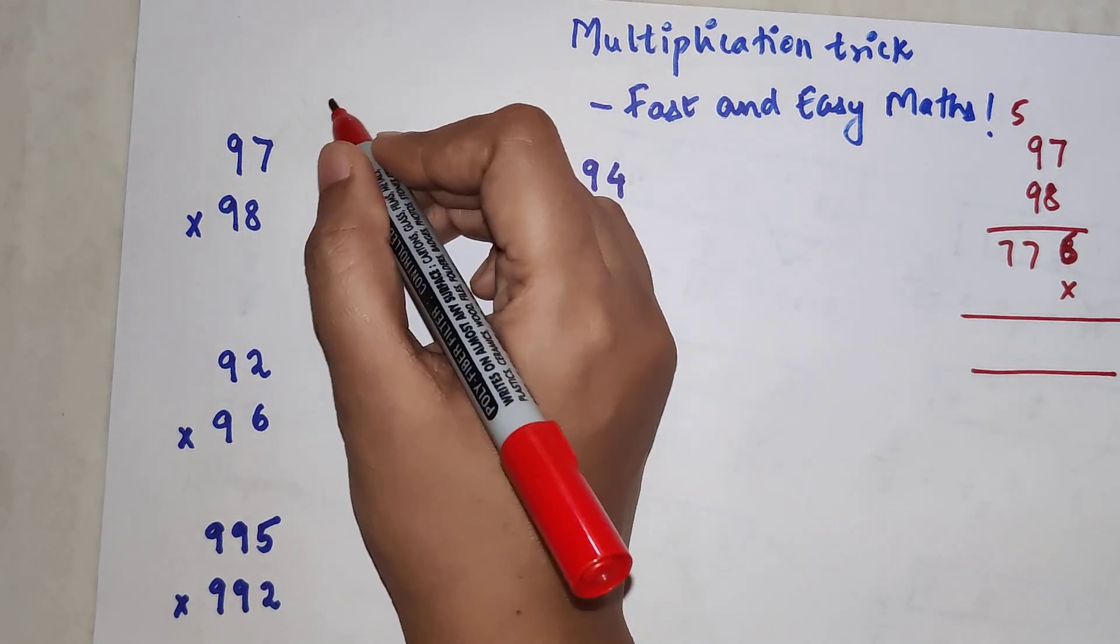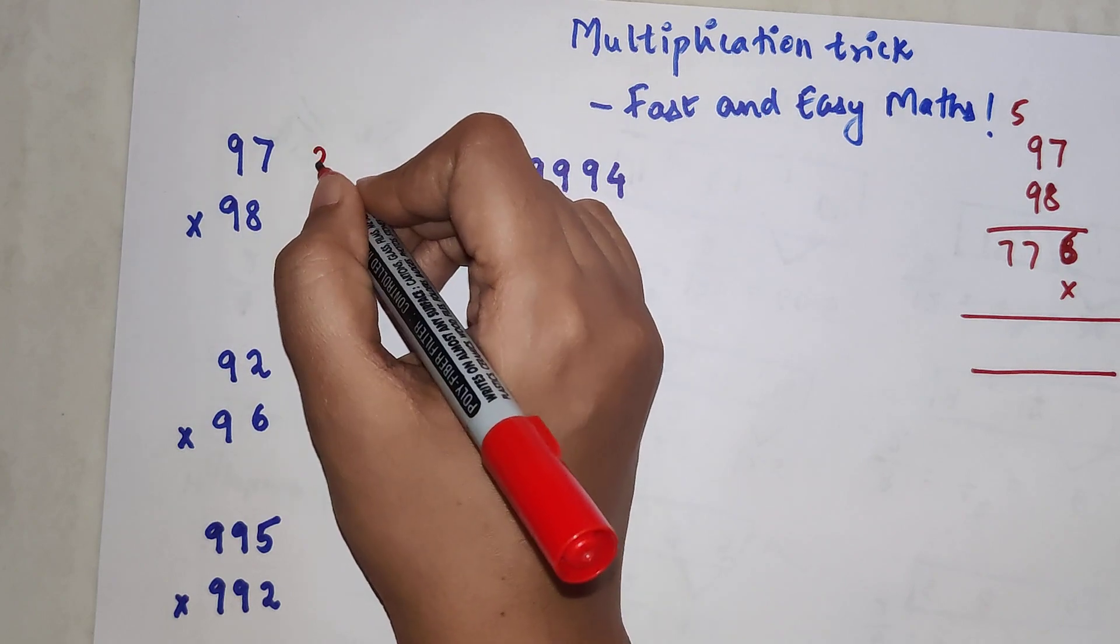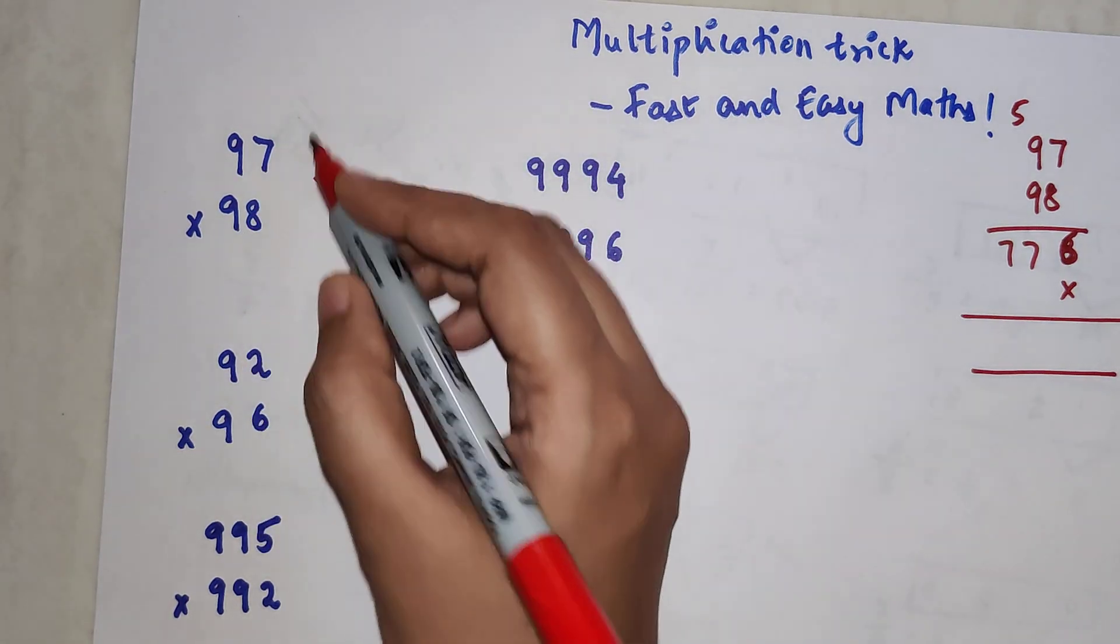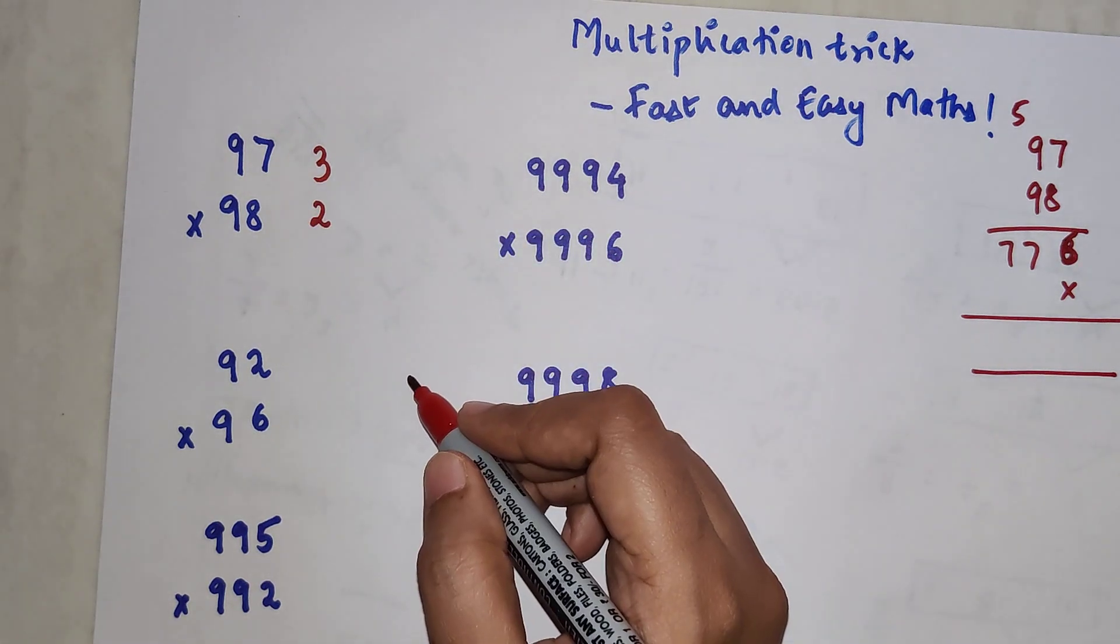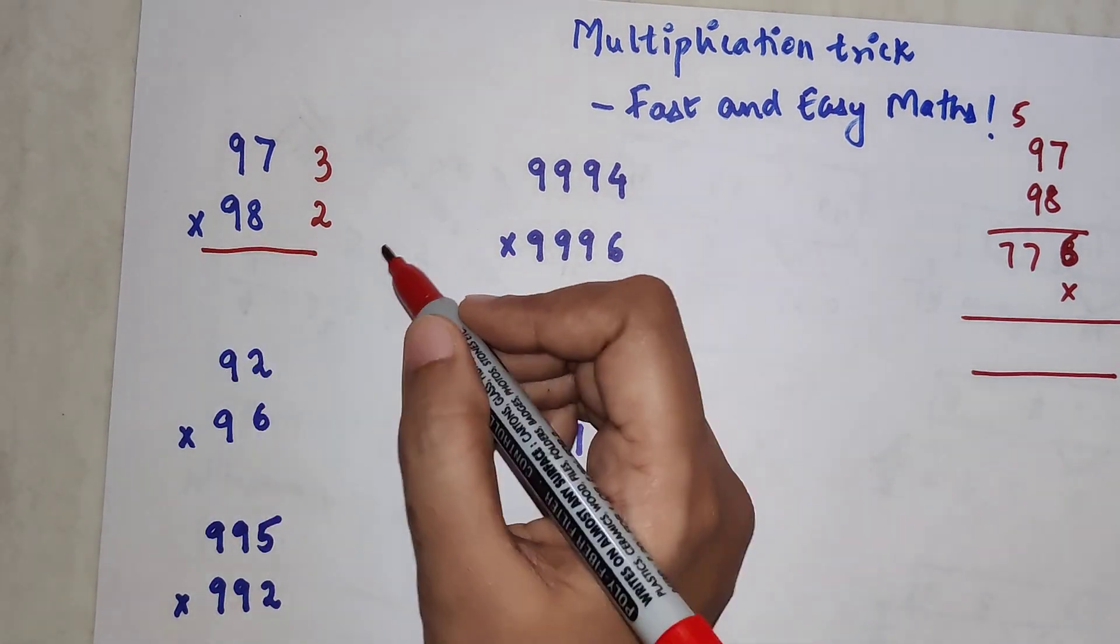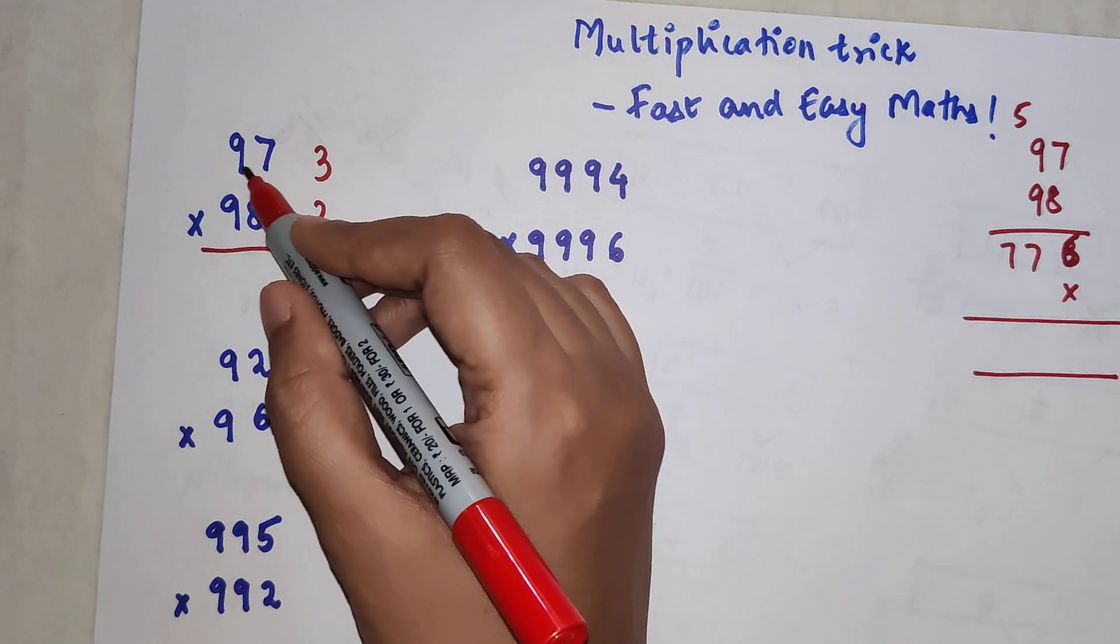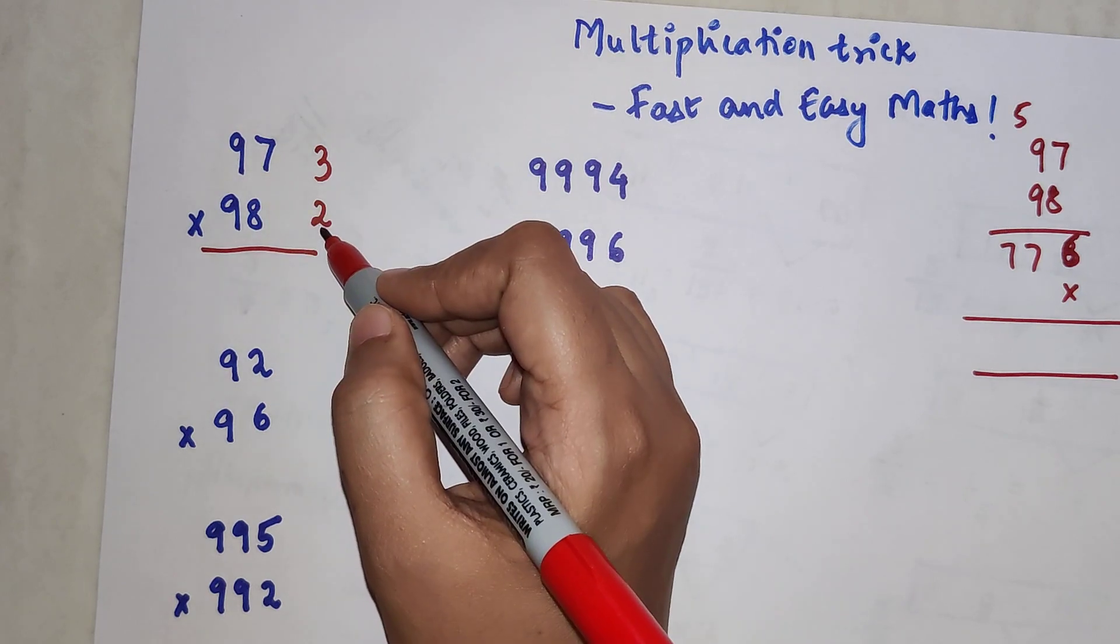So 97 is three digits away from 100 and 98 is two digits away from 100. You subtract diagonally - either 97 and 2, or 98 and 3. Whatever you do, your answer will be the same.